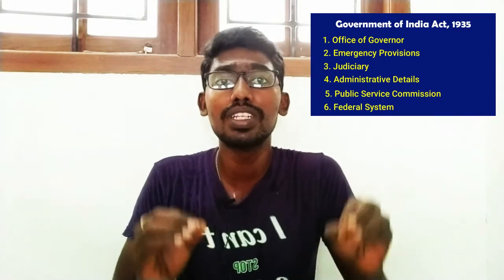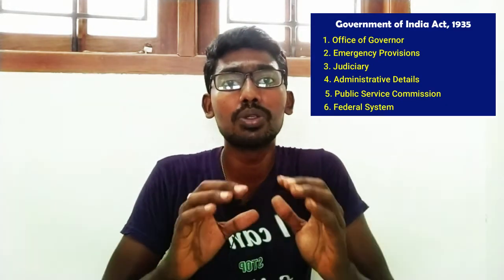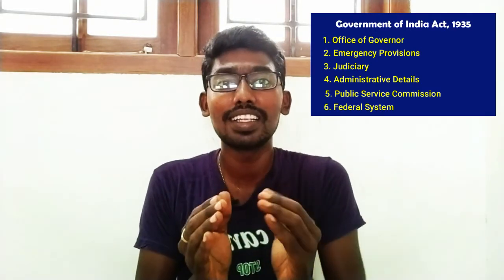Let me revise once more. Government of India Act 1935: First — Governor. Second — Emergency Provisions. Third — Judiciary. Fourth — Administrative Rules. Fifth — Public Service Commission. Sixth — Federal System. I will give you a shortcut to remember these six features of the Government of India Act 1935.